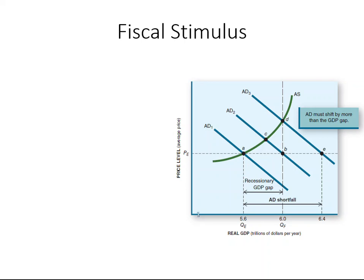Looking at this figure, if our current aggregate demand curve is AD1, the equilibrium point is point A, where the price level is PE and equilibrium real GDP is QE. Under the current situation, QE is actually smaller than QF, which is the full employment GDP — our macro goal. The difference between QE and QF in this case is called a recessionary GDP gap, which is the amount by which equilibrium GDP falls short of full employment GDP.